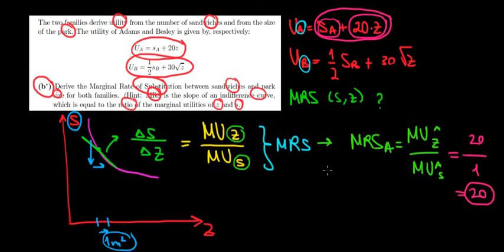With the same logic, we're doing the MRS for family B. MRS for family B is going to be the ratio between the marginal utilities of family B with respect to Z, with respect to the park size, divided by the marginal utility of family B with respect to the sandwiches.